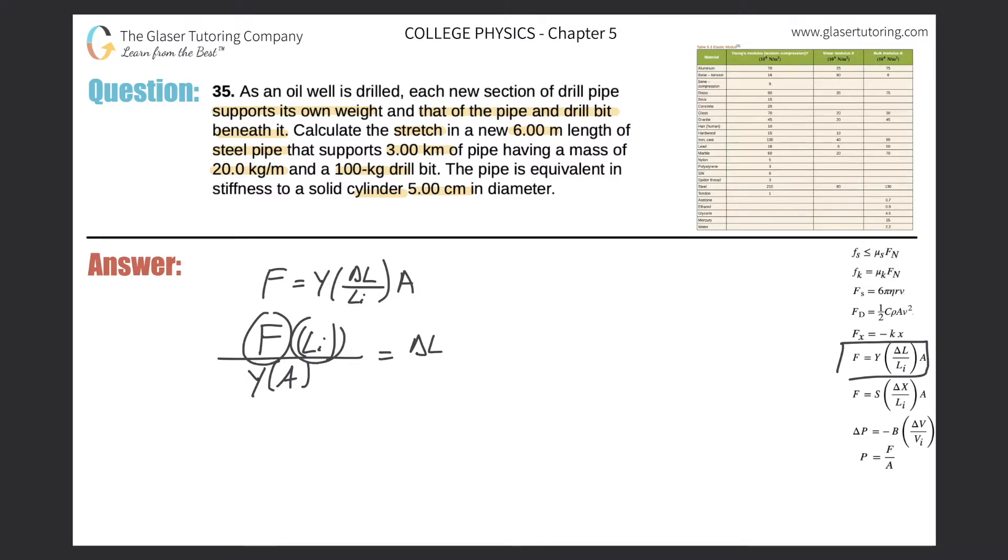So that's what we need. This is exactly how we're going to calculate the change in length. I need to know the force, the initial length, Young's modulus, and the cross-sectional area. Now what I'm going to do is I'm going to look to find each of them, so let's first find the force.